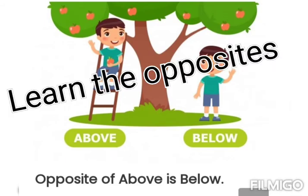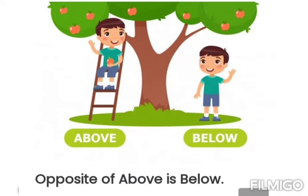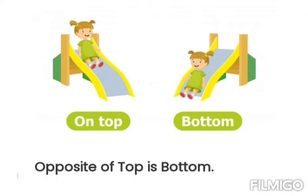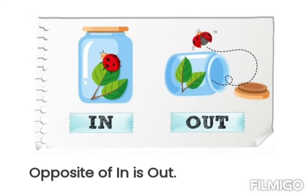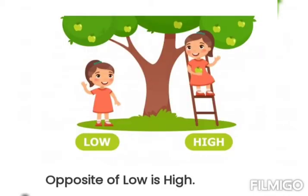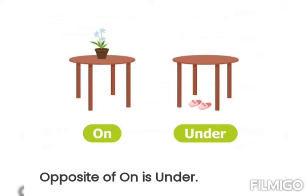Hi children, let us learn the opposites today. Above, below — upar, niche. On top, bottom — upar, niche. In, out — andar, bahar. Low, high — niche, upar.